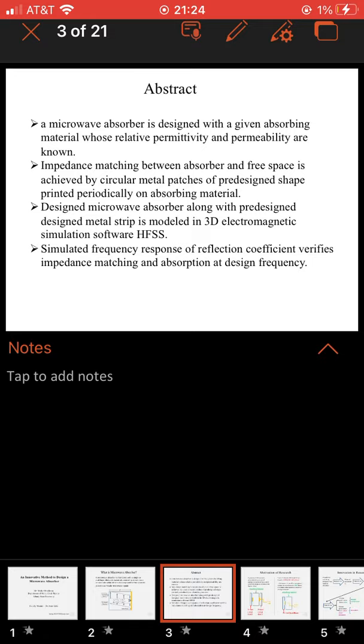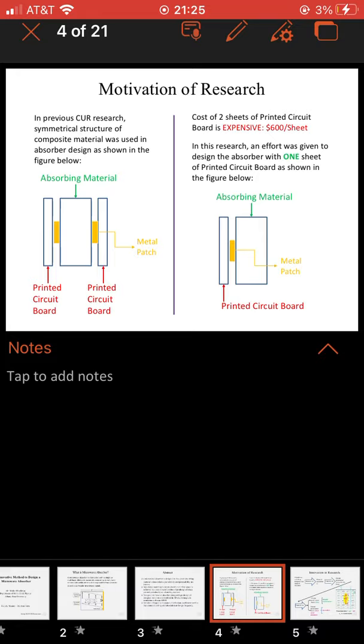In the abstract, a microwave absorber is designed with a given absorbing material whose relative permittivity or epsilon r and permeability are known. Impedance matching between absorber and free space is achieved by circular metal patches of pre-designed shape printed periodically on absorbing material. The designed microwave absorber along with pre-designed metal strip is modeled in 3D electromagnetic simulation software HFSS. Simulated frequency response of the reflection coefficient verifies impedance matching and absorption at the design frequency.